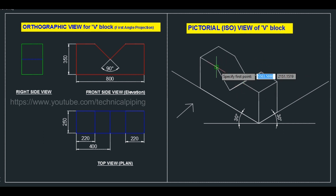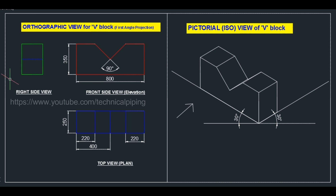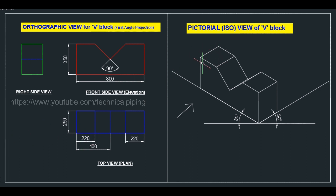Now we have the V-block assembly view. The front view shows height 350 mm and length 800 mm. The right side view shows this part with the V-cutting as a dashed line. The top view shows the 250 mm width, 220 mm cuts, the V-center at 400 mm, and the two small V-block horizontal features at 220 mm.